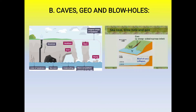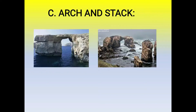This opening on the top of the cliff roof is called a blowhole. The sea water is forced out from the blowhole in the form of spray. These openings are known as blowholes. The third feature of wave erosion is arcs and stacks.